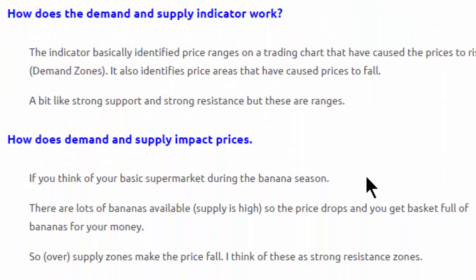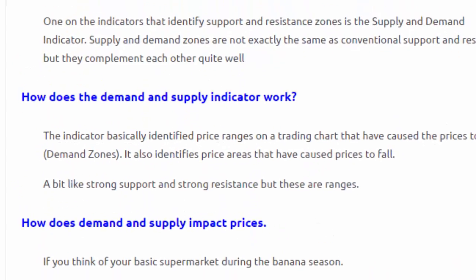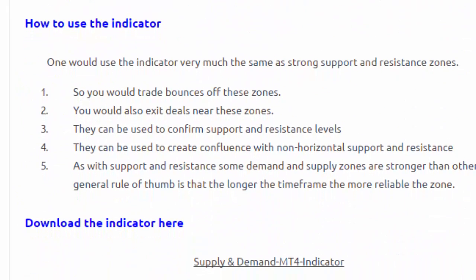Essentially, this indicator identifies the supply zones and the demand zones. When there's strong demand, prices will rise; when there is poor demand, prices will fall. That is basically how the indicator works — it identifies areas that have caused the price to rise and areas that have caused the price to drop.